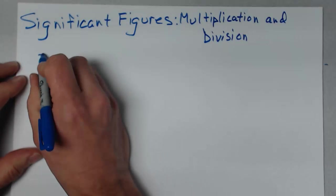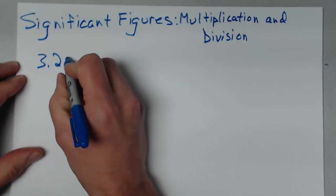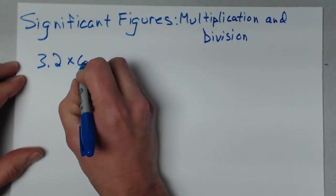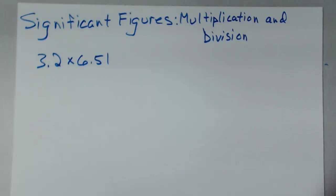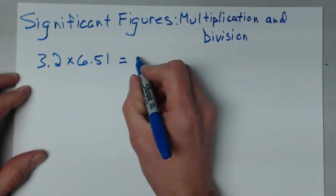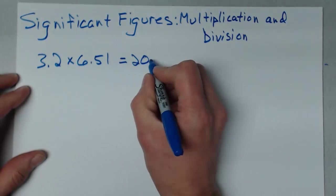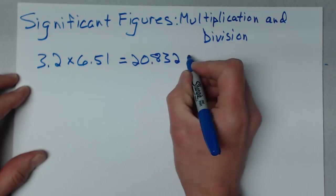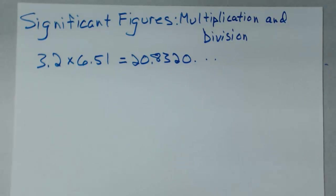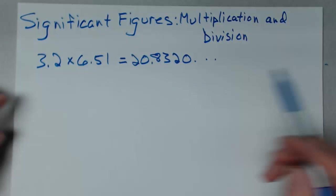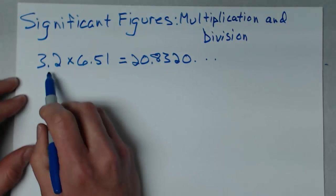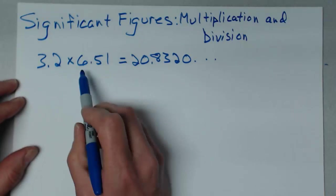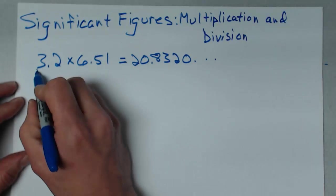Take the number 3.2 times 6.51. If I do that on my calculator, it shows 20.8320 with repeating zeros, but I can't write that many numbers. I have only two significant figures in 3.2 and three significant figures in 6.51.